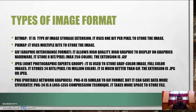JPEG (Joint Photographic Experts Group) is used to store grayscale or full-color images. It stores 24 bits per pixel and supports up to 16 million colors, making it much better than GIF. Its extension is .jpg or .jpeg. PNG (Portable Network Graphics): PNG-8 is similar to GIF with the same features but saves data more efficiently. PNG-24 uses lossless compression, meaning data is not compressed, so it takes more space but provides the best quality.